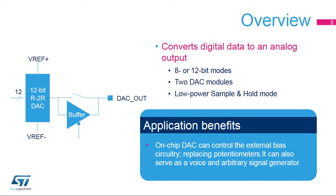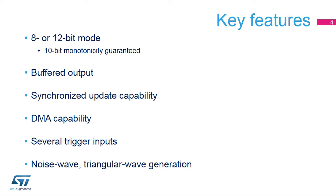It can also create voice and arbitrary signals. The digital-to-analog converter inside STM32F7 products offers simple conversion in 8- or 12-bit mode. 10-bit monotonicity is guaranteed. The DAC output can have a low impedance buffer to drive external loads. Two DACs can be synchronized with each other. The input data can be transferred by DMA, which offloads the CPU. The DAC output data can be updated by a timer, an external trigger, or a software trigger.